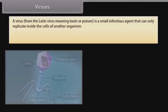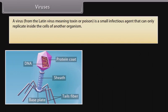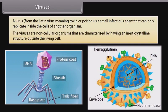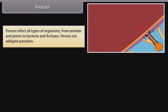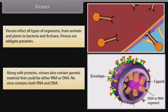A virus is a small infectious agent that can only replicate inside the cells of another organism. Viruses are non-cellular organisms characterized by having an inert crystalline structure outside the living cell. Viruses infect all types of organisms, from animals and plants to bacteria and archaea. Viruses are obligate parasites. Along with proteins, viruses also contain genetic material that could be either RNA or DNA. No virus contains both RNA and DNA.